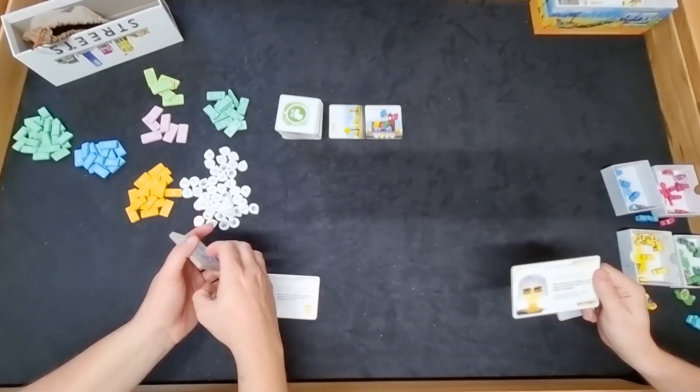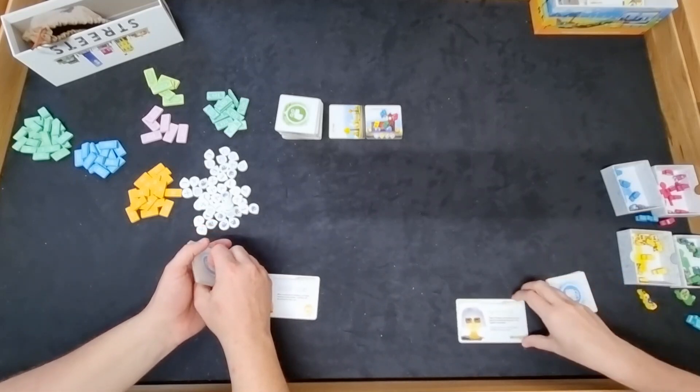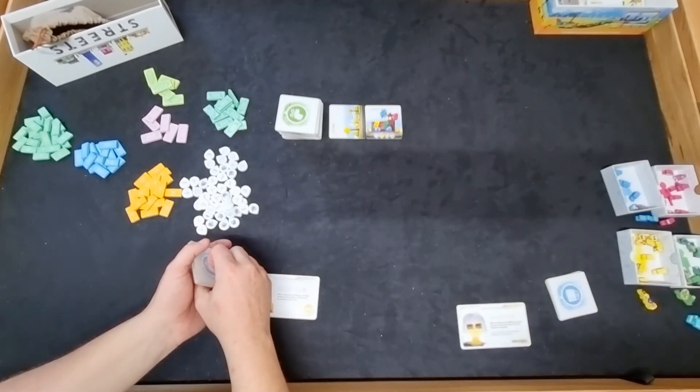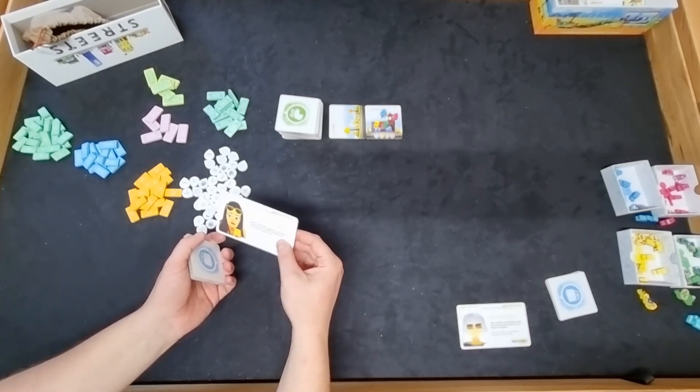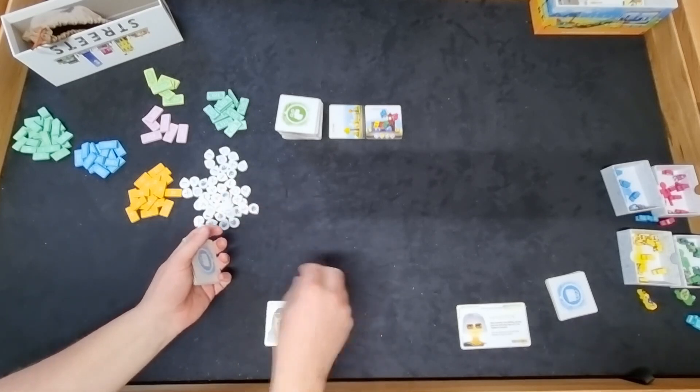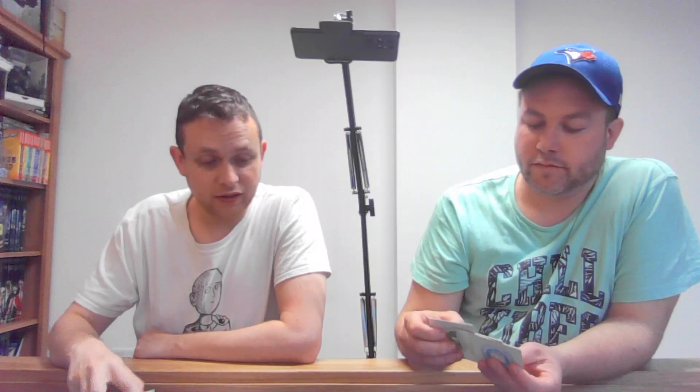With this one we've got the deluxe Kickstarter edition so we are playing with the business expansion as well as the consultant expansion. My consultant is the investor, so when claiming a new building I can place two ownership tokens on it to double the value. And when I score my buildings all hipster card symbols count as wild including the one printed on the card. You are the hipster legend. Okay, so let's dive in.